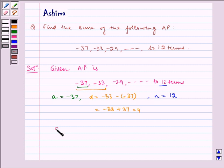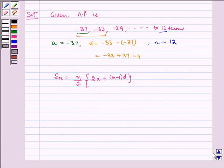So applying the formula, Sn equals n by 2 multiplied by 2A plus n minus 1 D, which equals 12 by 2 multiplied by 2 into A, that is 2 multiplied by minus 37, plus 12 minus 1 multiplied by D, that is 4.